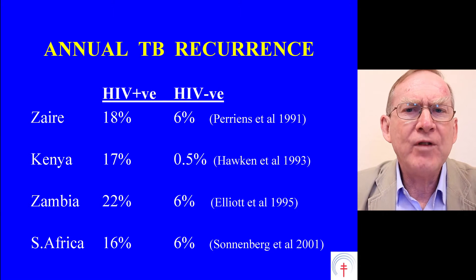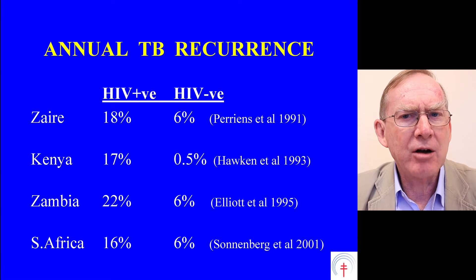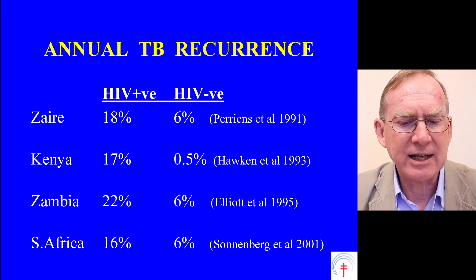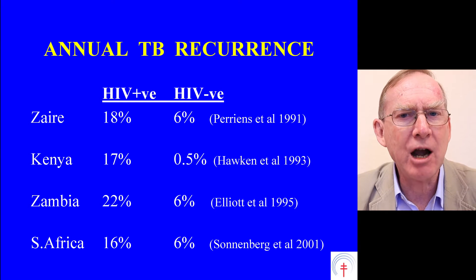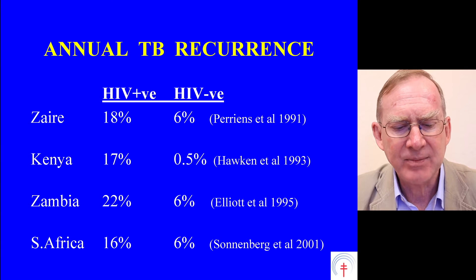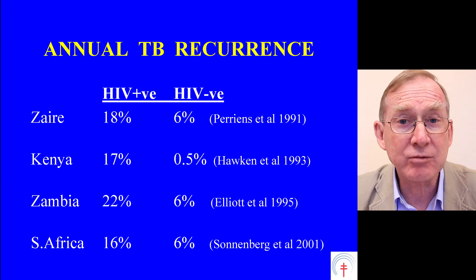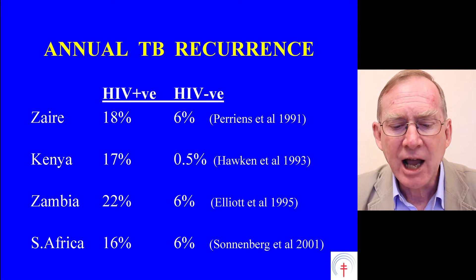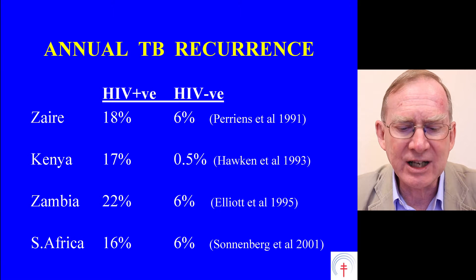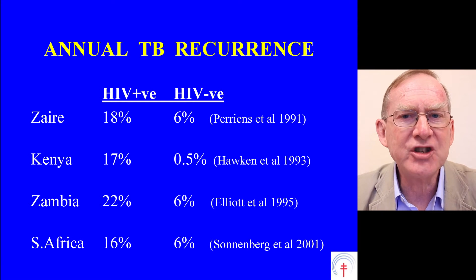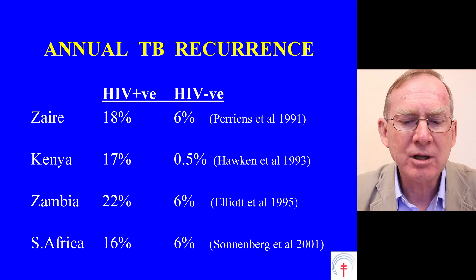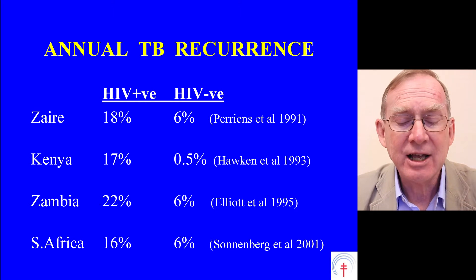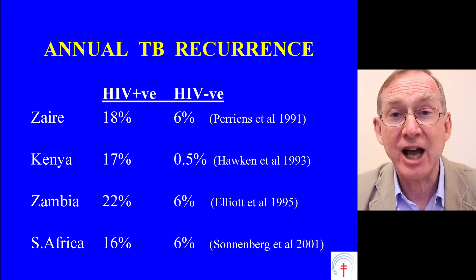These were four very good clinical studies done in sub-Saharan Africa in the late 1990s, looking at annual TB recurrence rates in relation to HIV status, carried out in Zaire, the Democratic Republic of Congo, Kenya, Zambia, and South Africa. You can quite clearly see here that if you are HIV positive, you have a much higher risk of having annual TB recurrence rates compared with if you are HIV negative.